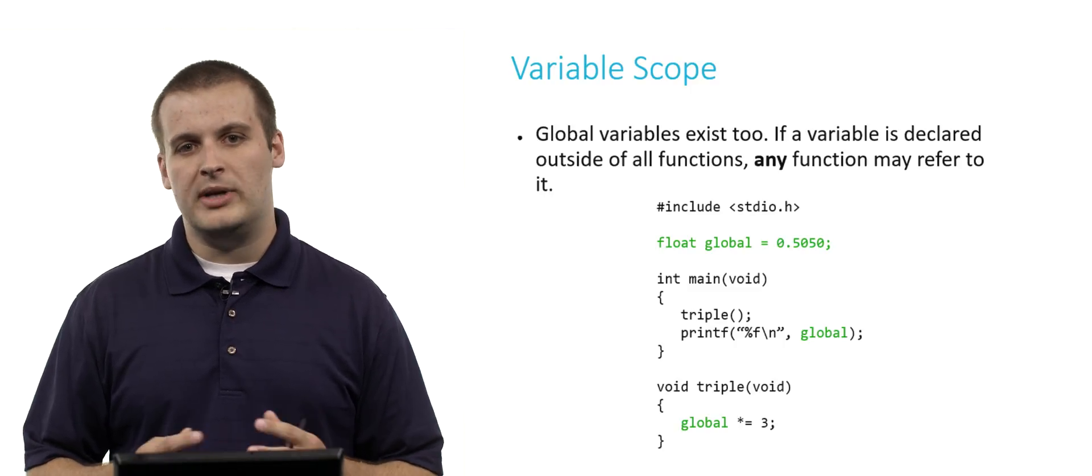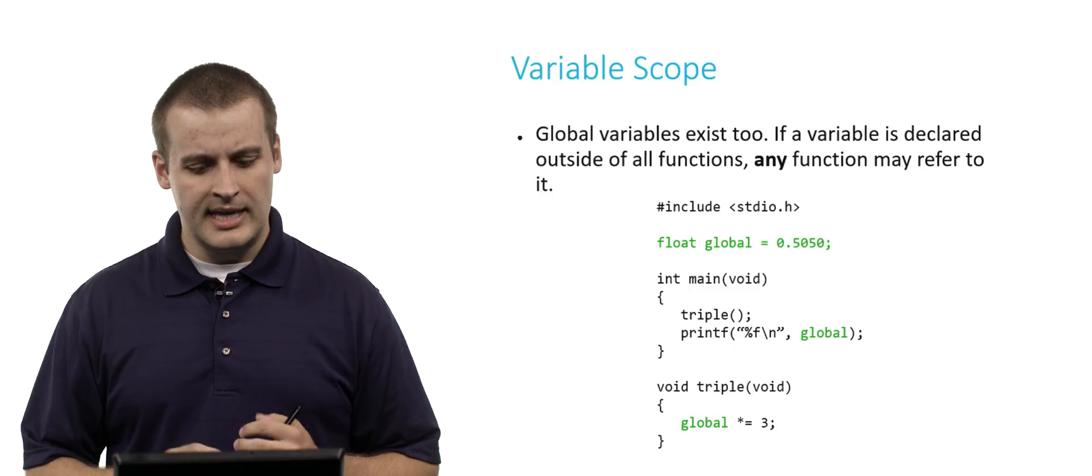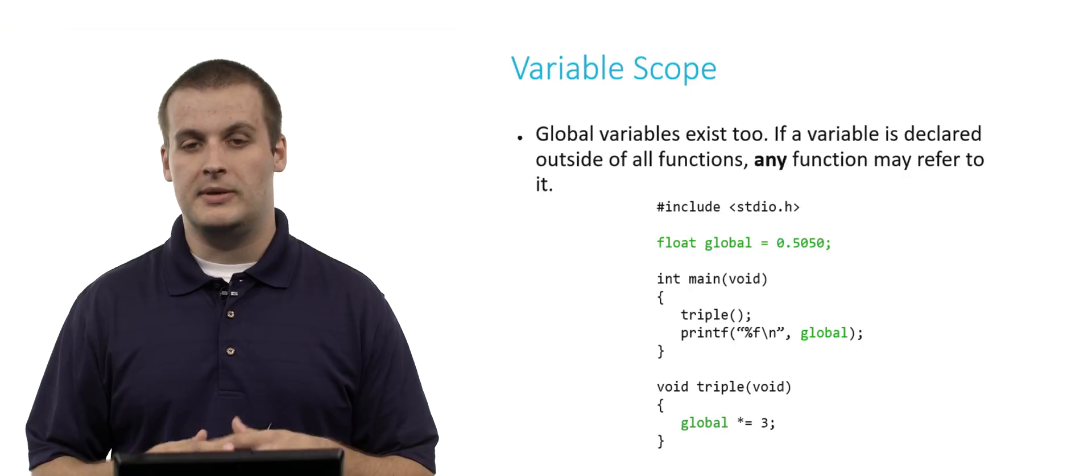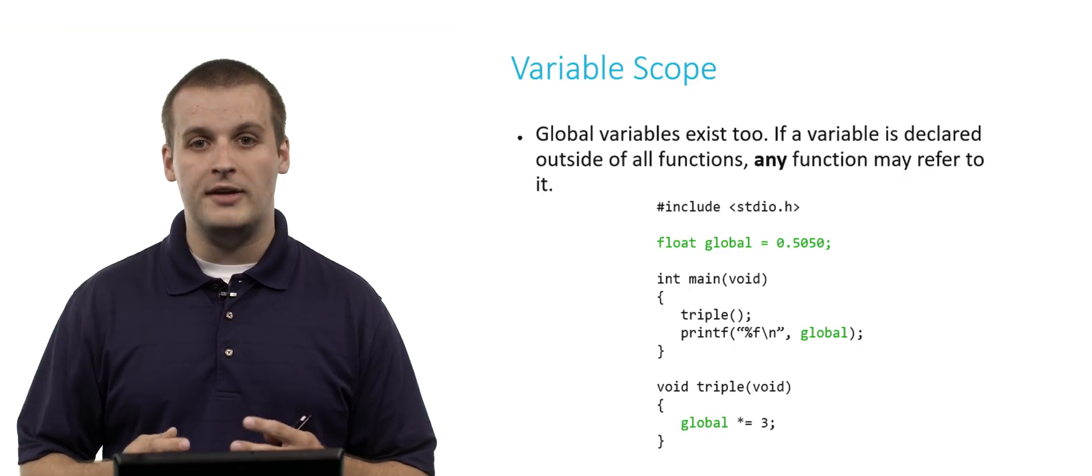In this case, I've highlighted in green a global variable declaration. The variable being declared is called global, just to be extremely clear about it. It is of type float, and I assign it the value .5050.